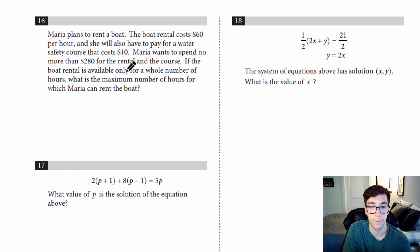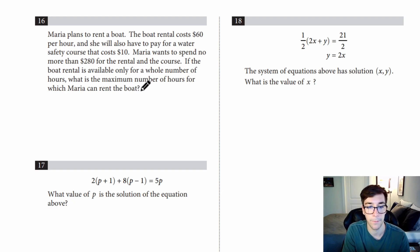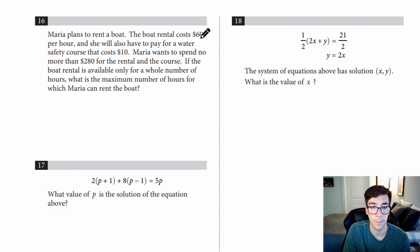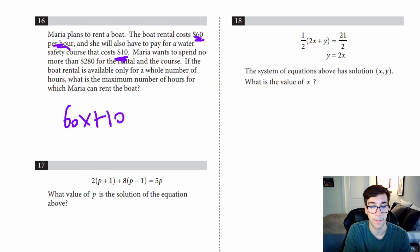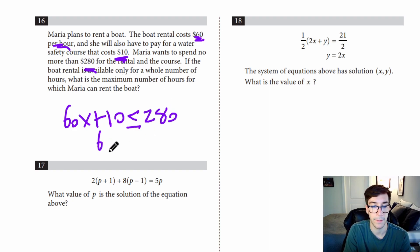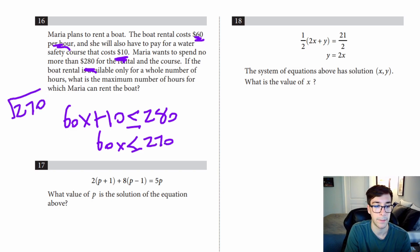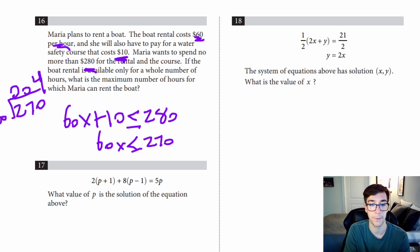Number sixteen: Maria plans to rent a boat. The rental costs $60 per hour plus a one-time $10 water safety course. She wants to spend no more than $280. The equation is 60X plus 10 is less than or equal to 280. Solving: 60X is less than or equal to 270. 270 divided by 60 is about 4. Since rentals are whole hours only, the maximum is 4 hours.